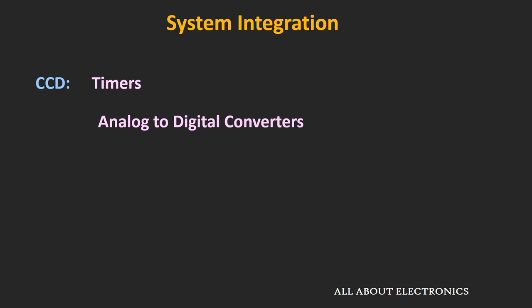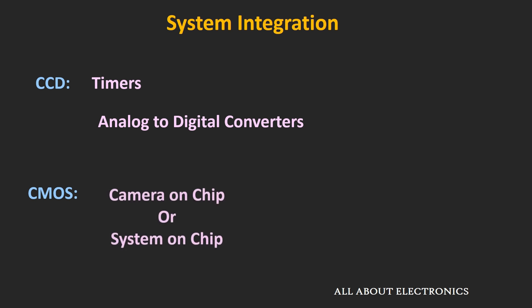The overall size of the CCD sensor will therefore be large. While in the case of the CMOS sensor, as the fabrication procedure is very similar to that of an integrated circuit, it is possible to integrate these peripheral components into a single chip. In the CMOS sensor, it is possible to have a camera on chip or a system on chip, and because of that, this CMOS sensor is quite compact.